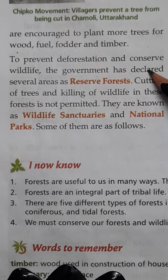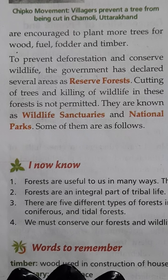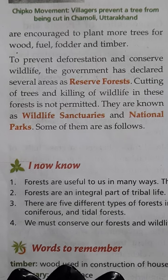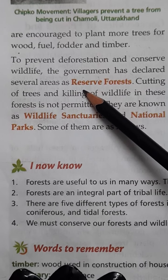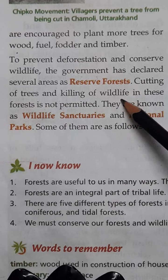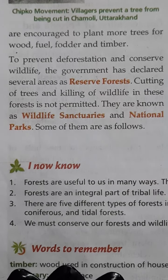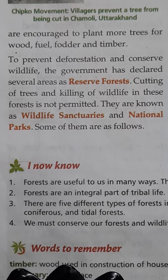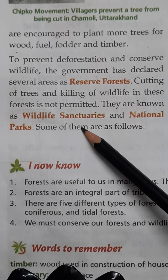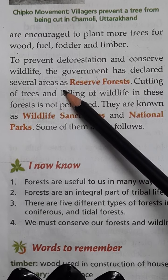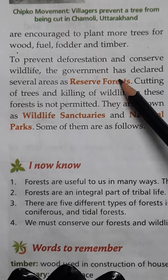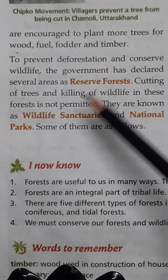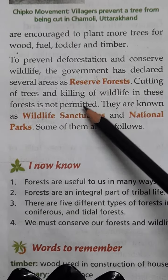The government encourages people to plant trees in various ways, such as celebrating Van Mahotsav at the beginning of the rainy season every year. Under the social forestry scheme of the government, rural people are encouraged to plant more trees for wood, fuel, fodder, and timber.